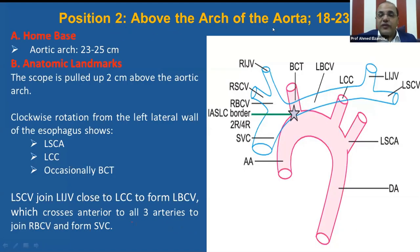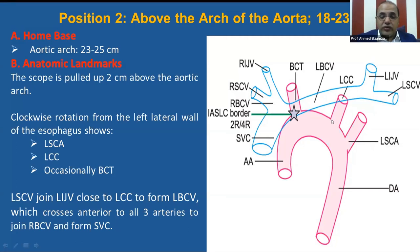Position 2 is above the arch of aorta, from 18 to 23 centimeters. The home base is the arch of aorta. The scope is pulled up two centimeters above the aortic arch, then clockwise rotation from the left lateral wall of the esophagus. This is the left subclavian artery, then with further clockwise rotation we get the left common carotid artery. The left subclavian vein joins the left internal jugular vein to form the venous confluence and form the left brachiocephalic vein near the left common carotid artery. The left brachiocephalic vein crosses the three main arteries above the arch of aorta to join the right brachiocephalic vein and form the superior vena cava.